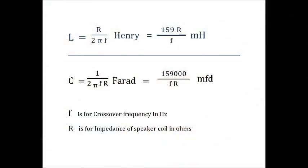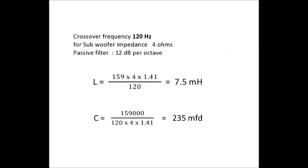Hi friends, in my last video I showed how to calculate component values of a crossover network. To make a passive network for a 4 ohm subwoofer with a crossover frequency at 120 Hz, we get the values of the inductor to be 7.5 mH and capacitor of 235 microfarad. Let us see how we can make it.